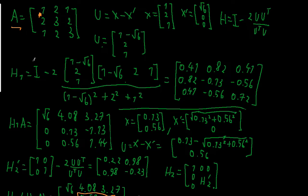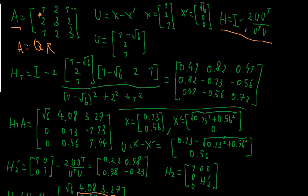I want to do a QR decomposition of that matrix, so A equals QR. I want to use the Householder transformation to do so. Here is my formula for the Householder transformation: the identity matrix minus 2 times u times u transpose, over u transpose u.